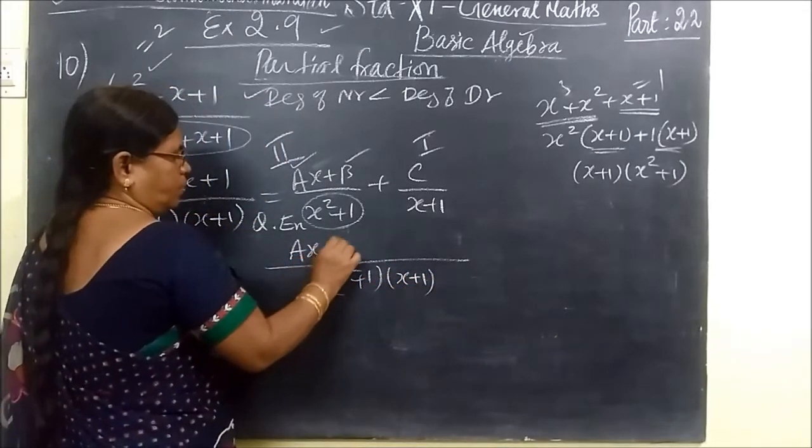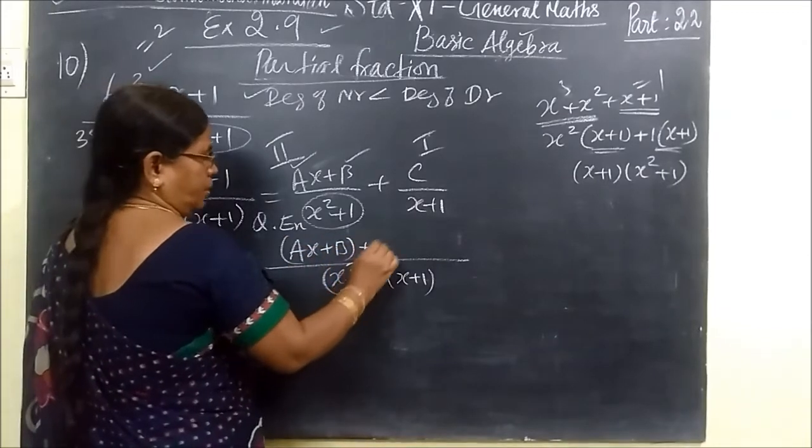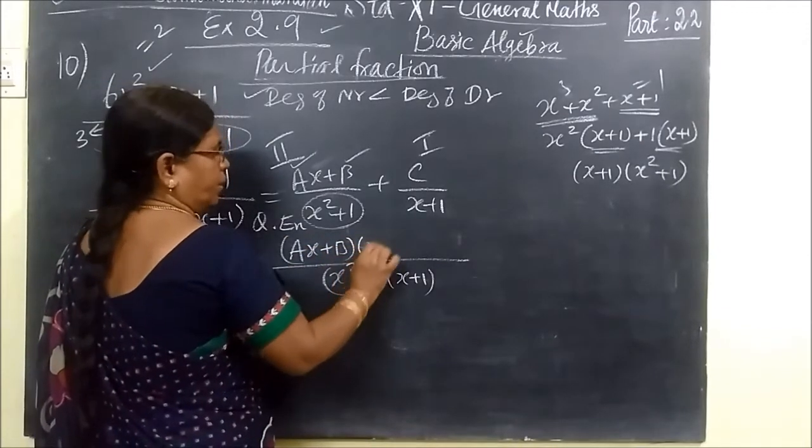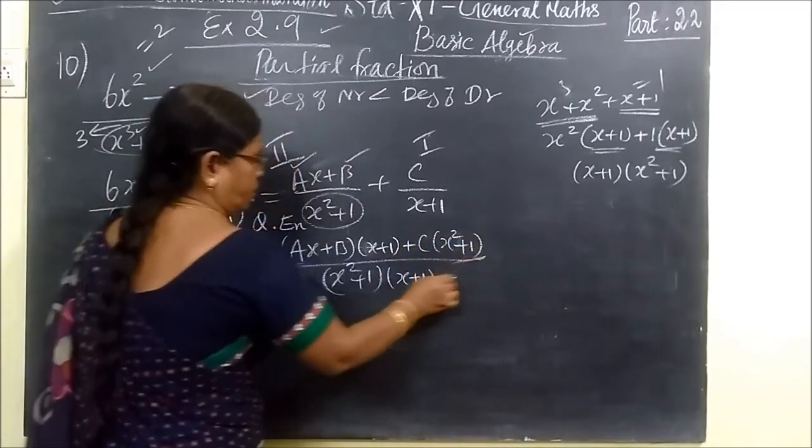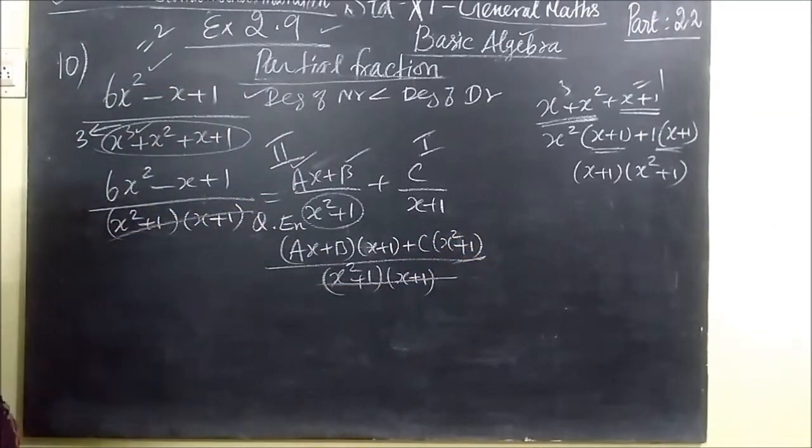Ax plus B, x plus 1, plus C bracket, x² plus 1. So you will remember how to cancel it.